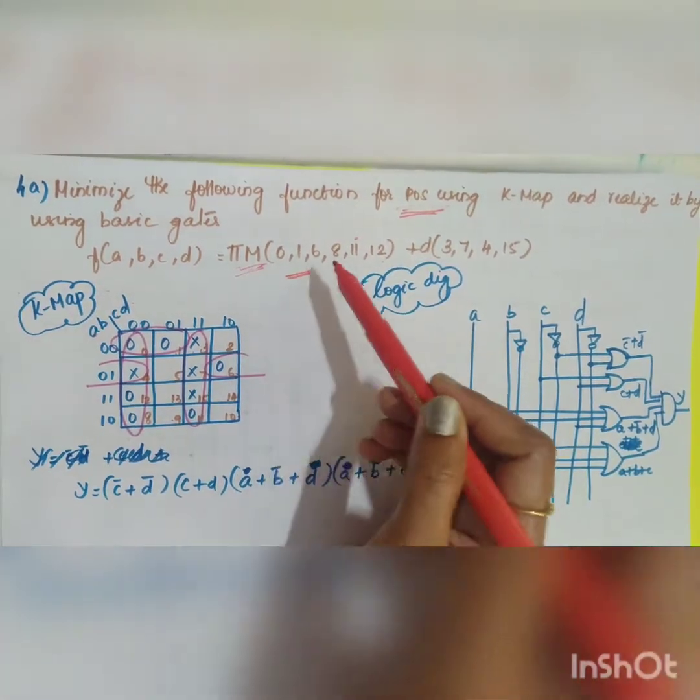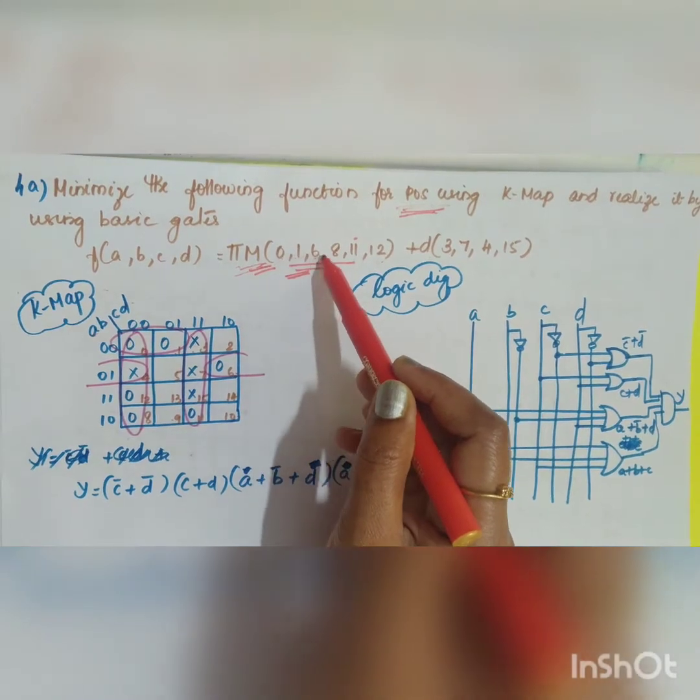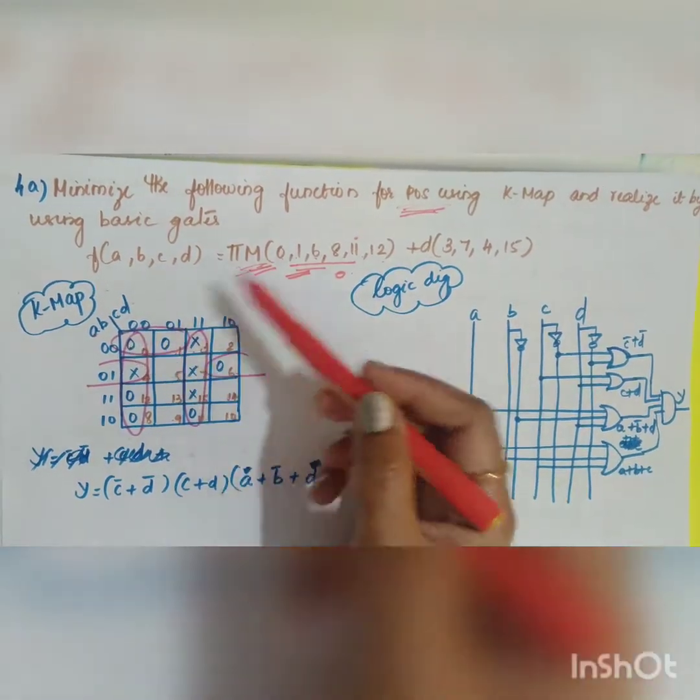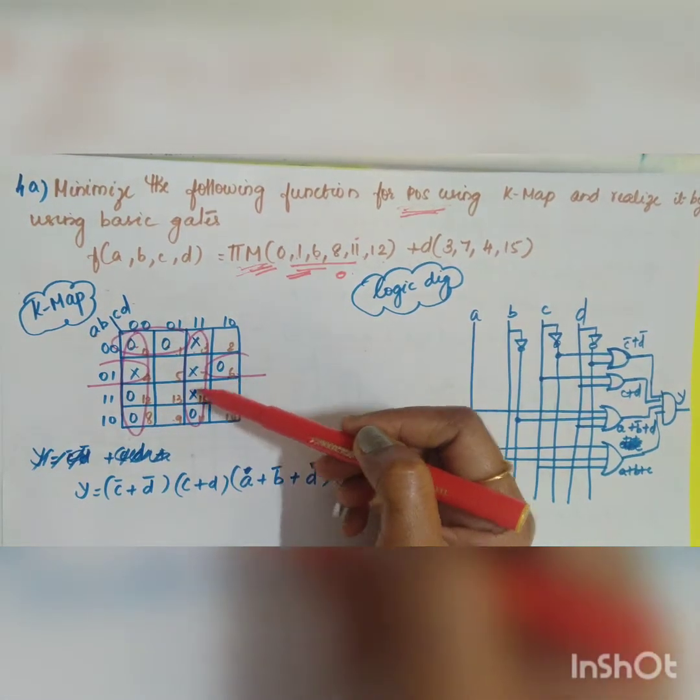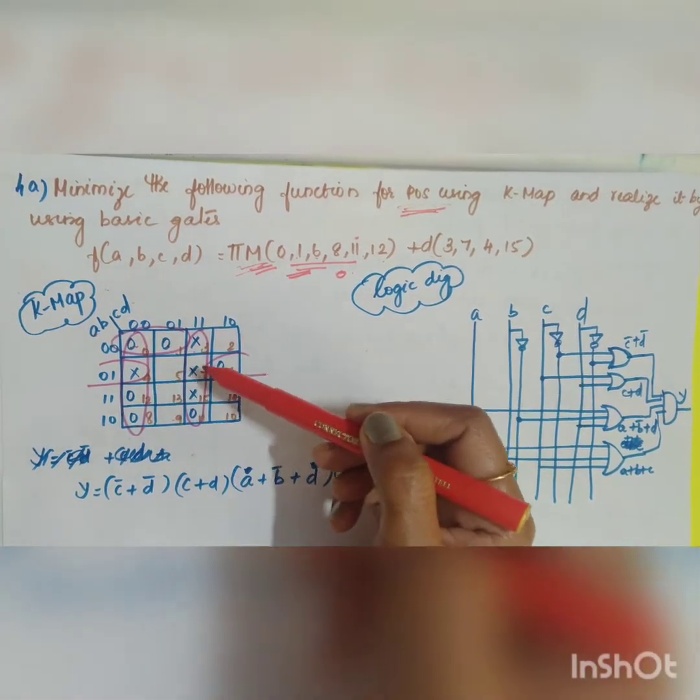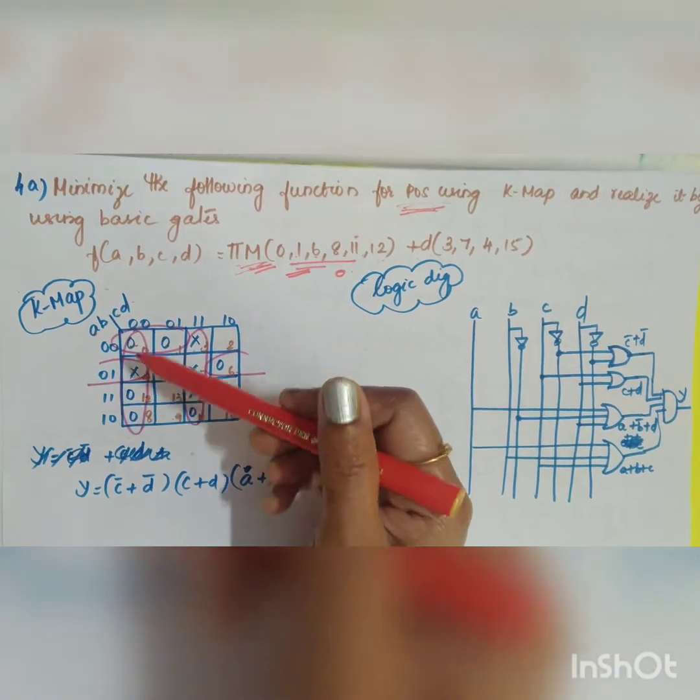Since it is product of sum or your max terms in the place of 0 1 6 8 you are going to give the value a 0. For 0 it is 0 for 1 it is 0 for 6 it is 0 for 8 it is 0 for 11 it is 0, 11 it is 0 and for 12 it is 0.